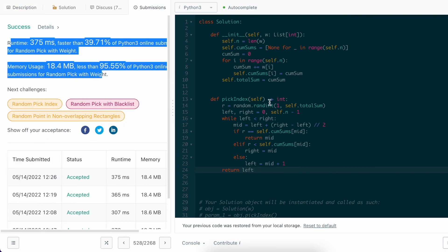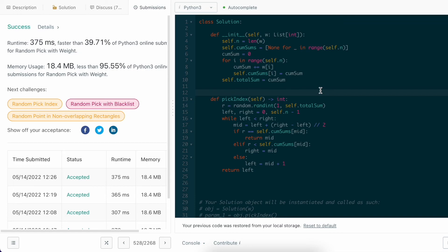In terms of runtime, the pick index, being binary search, is only O of log n. However, calculating the cumulative sum and total sum is O of n process. For storing the cumulative sum, we need O of n storage. So, in total, it is an O of n time and O of n memory solution.